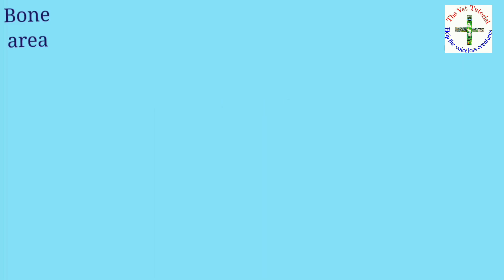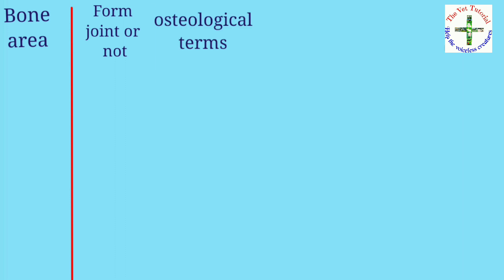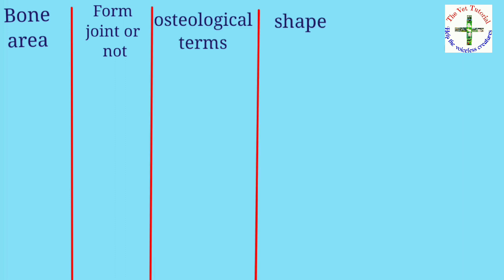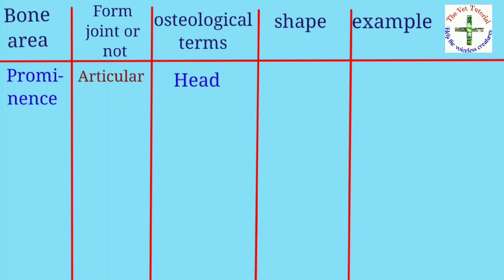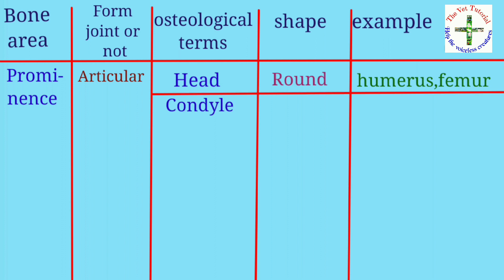Here we end the osteological terms. Before ending, let's see the compiled table, which includes bone area, whether joints are formed, osteological term, shape, and example. In the bone area section, under prominent and articular: the first term is head, its shape is round, example is humerus and femur. The second articular term is condyle, its shape is cylindrical, example is femur.